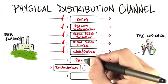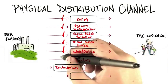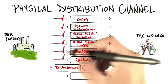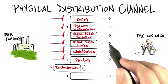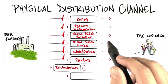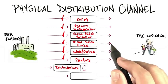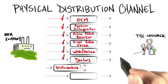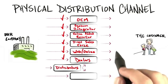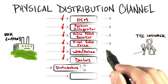Distributors might sell to dealers. Most dealers are simply storefronts; some might actually add some service or support, but they're essentially an extension of the distribution channel. Dealers talk to end users, though they may not always have a physical storefront for end user customers.